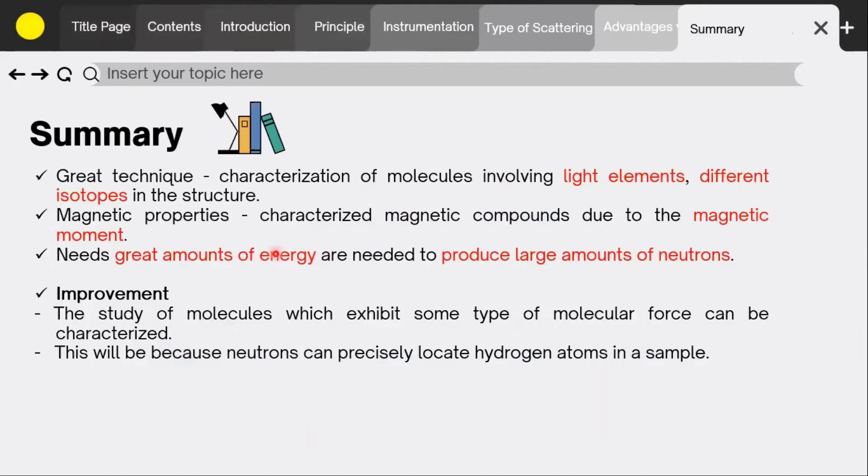In summary, neutron diffraction is a great technique used for complete characterization of molecules involving light elements and also very useful for the ones that have different isotopes in their structure. In addition, due to the magnetic properties, magnetic compounds can be characterized due to the magnetic moment that neutrons develop.